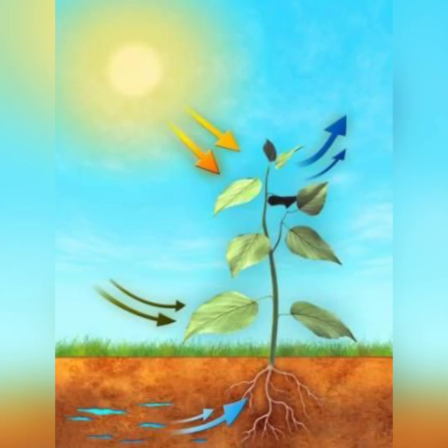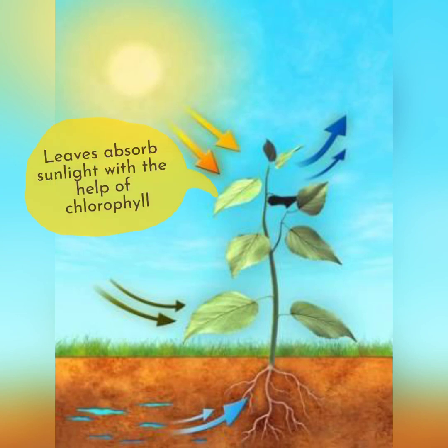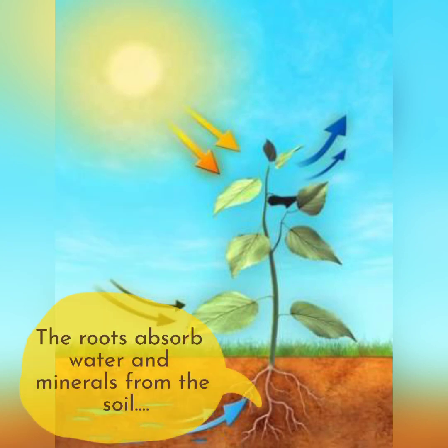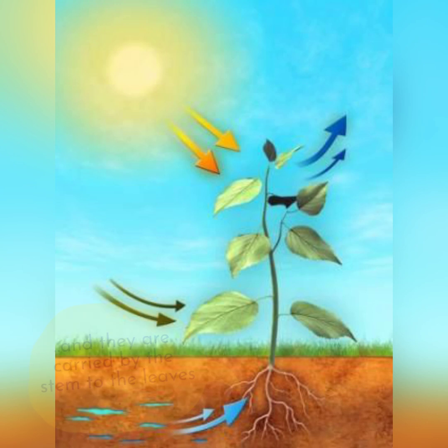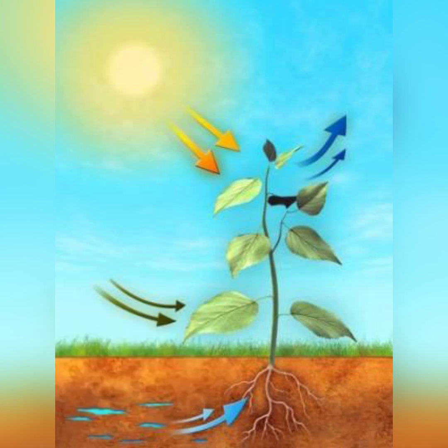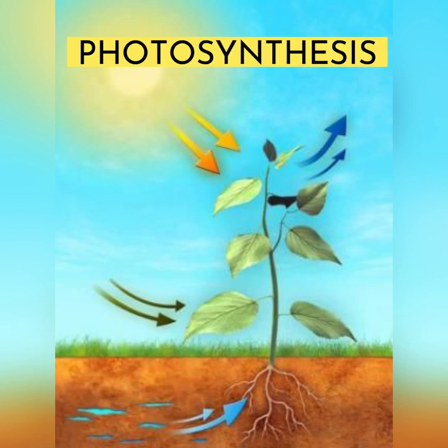Plants get the different materials required for photosynthesis like this: leaves absorb sunlight with the help of chlorophyll, the green substance we talked about earlier. Leaves take in carbon dioxide from the air with the help of stomata. The roots absorb water and minerals from the soil, and they are carried by the stem to the leaves. As a result of all these, photosynthesis takes place.